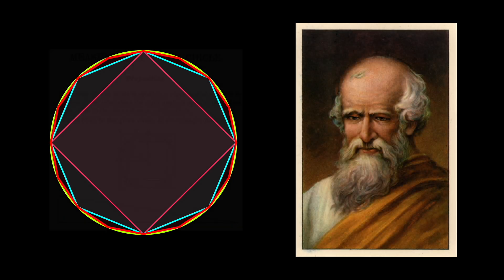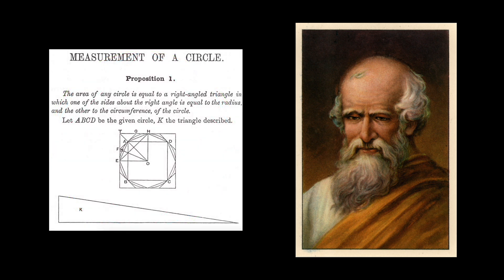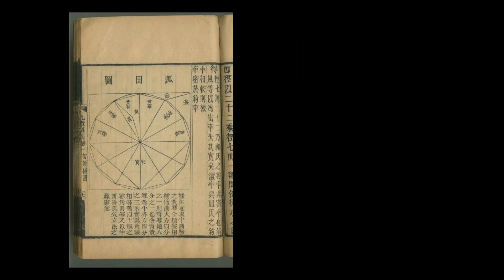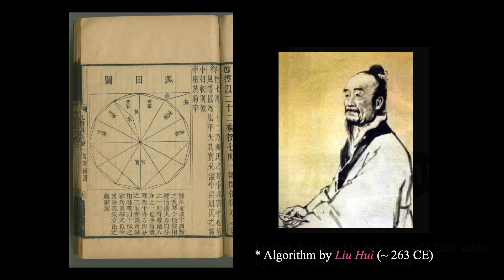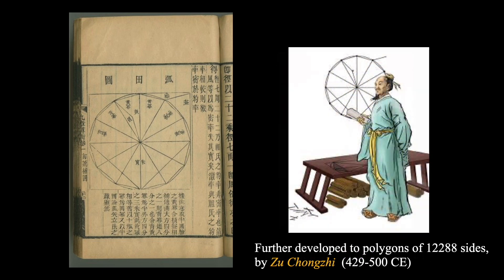Using inscribed polygons to estimate pi was the primary method of pi computation in ancient mathematics. This method can be dated back to Archimedes, where he used a regular polygon with 96 sides to find out upper and lower bounds of pi. Throughout the next 2,000 years, mathematicians across the world were able to compute pi up to 7 decimal places using regular polygons up to 12,288 sides.